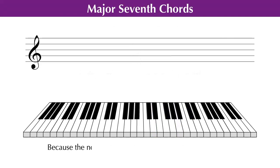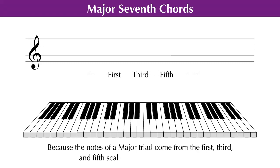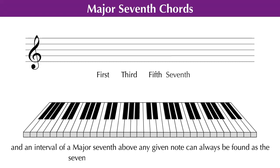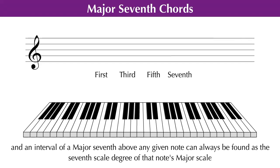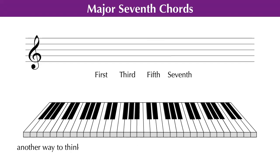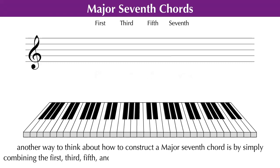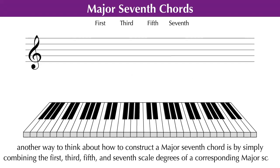Now, because the notes of a major triad come from the first, third, and fifth scale degrees of a major scale, and an interval of a major seventh above any given note can always be found as the seventh scale degree of that note's major scale, another way to think about how to construct a major seventh chord is by simply combining the first, third, fifth, and seventh scale degrees of a corresponding major scale.